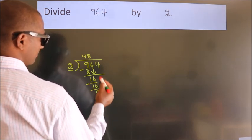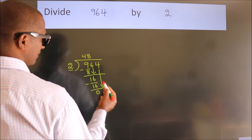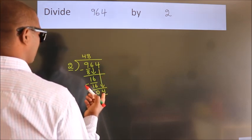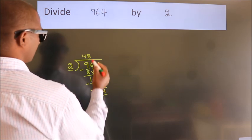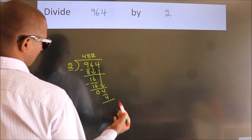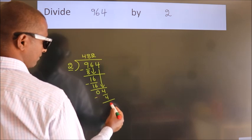After this, bring down the beside number. So 4 down, so 4. When do we get 4? In 2 table, 2 twos, 4. Now we subtract, we get 0.